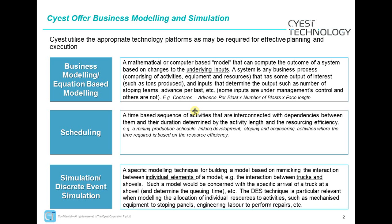You can model all the different activities, equipment, and resources, then basically change the different inputs and it will change the objective function of the model. A simple model is meters squared mined, or synthesis is advanced with blast times number of blasts times face length. A model consists of lots and lots of these different relationships, and I'll show you in a demo an actual model.